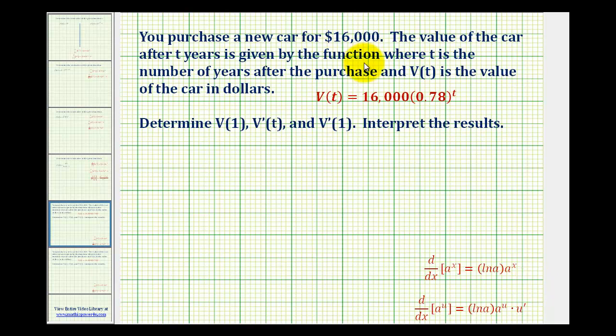You purchase a new car for $16,000. The value of the car after t years is given by the function where t is the number of years after the purchase and V(t) is the value of the car in dollars. As you know, the value of a new car over time decreases or the car depreciates. This is an example of that situation.